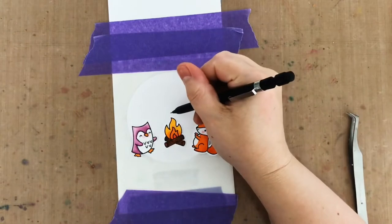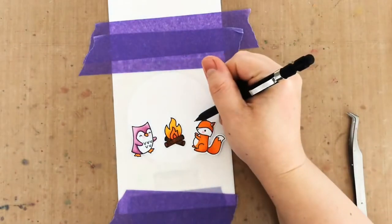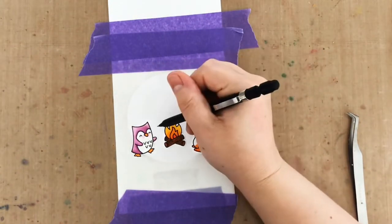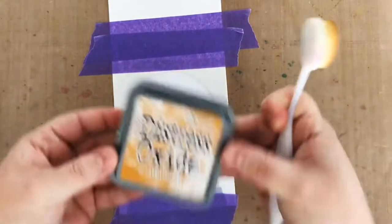Now to use this circle stencil, I've tacked down my card with some low tack purple tape, and then I've used some more tape because I really like tape to secure my stencil over my card.